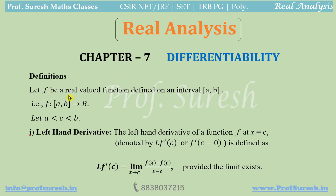Let f be a real-valued function defined on a closed interval [a, b]. This function is defined as real-valued, meaning f(x) is a real number. The domain is the closed interval [a, b]. The point c lies between a and b.